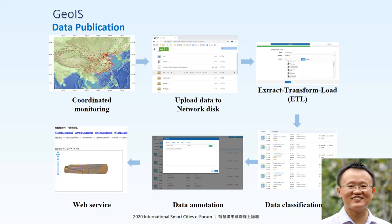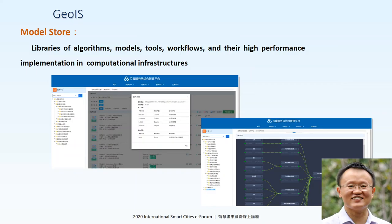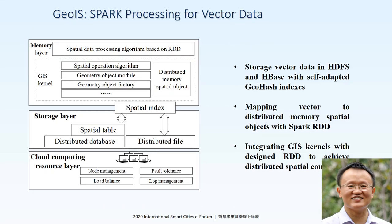The model store is actually a library of algorithm models toward the workflow, with high-performance implementation in computational infrastructure. For high-performance computation, we can provide Spark processing for vector data — where data are stored in HDFS and HBase using the distributed spatial index. Data objects can be mapped to the spatial RDD, and traditional GIS software kernels can be migrated to the spatial RDD.